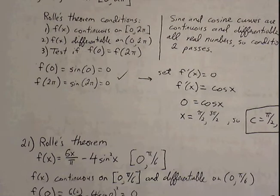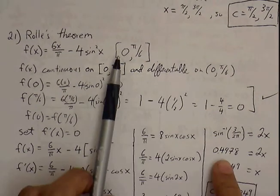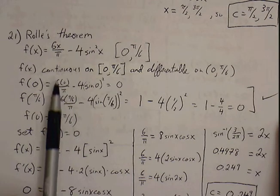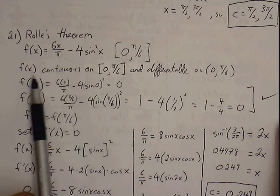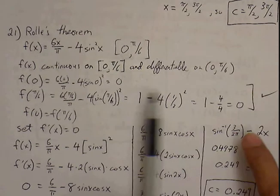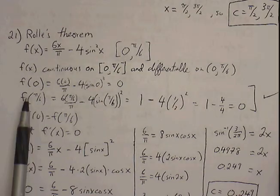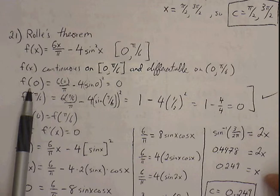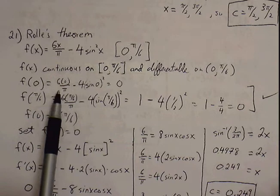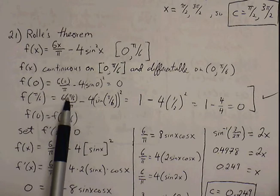Number 21 — again, we want to see if Rolle's Theorem applies. Here's our function between the closed interval of 0 and pi over 6. Again, we're dealing with sine functions, so we know that our function is always continuous on the closed interval and differentiable on our open interval. We also need to test our third condition, which is our endpoints. Plug 0 into the original function — we'll get 0 minus 0, which is 0. Plug pi over 6 into the original function: 6 times pi over 6 over pi reduces to 1.